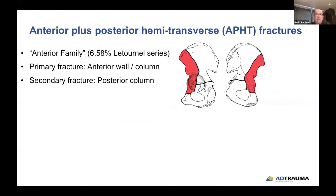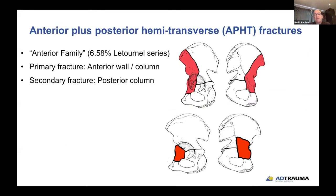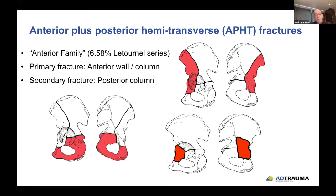This is in Chapter 13 of Letournel's textbook, and in his series the percentage of this subtype was 6.58%. In our experience at Sunnybrook, we're seeing more and more of these variants combined with the anterior column wall, as people stay more active into their older years. The primary fracture line is the anterior wall and/or column, and the secondary fracture line is the posterior column, coming at an angle approximately 90 degrees from the anterior column fracture.